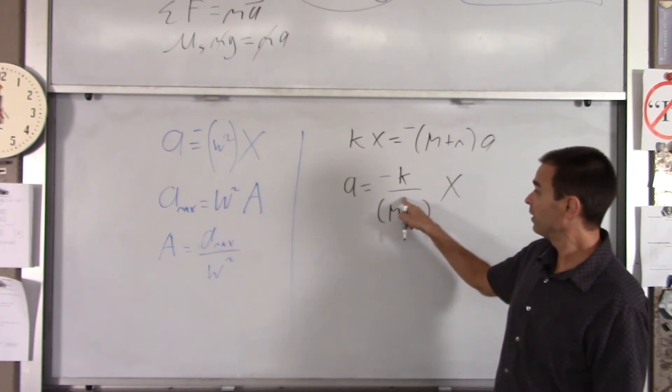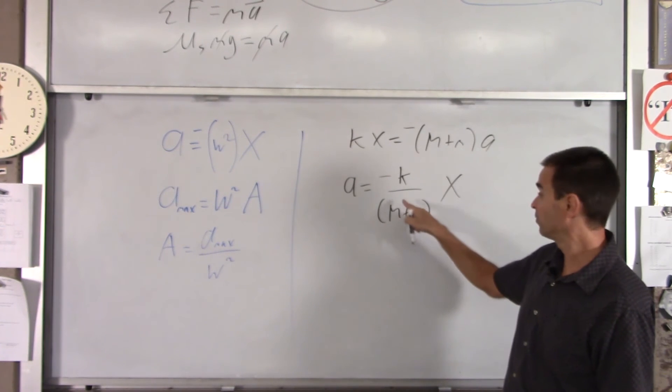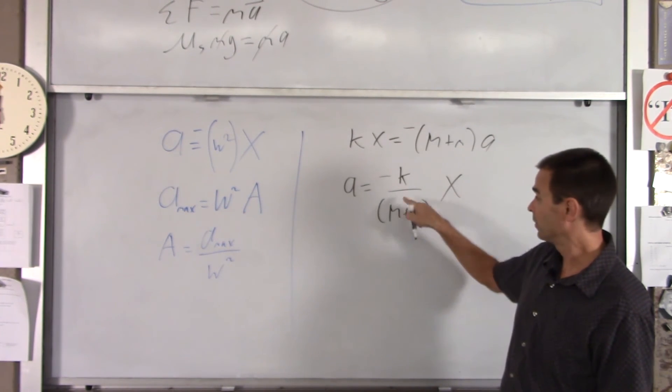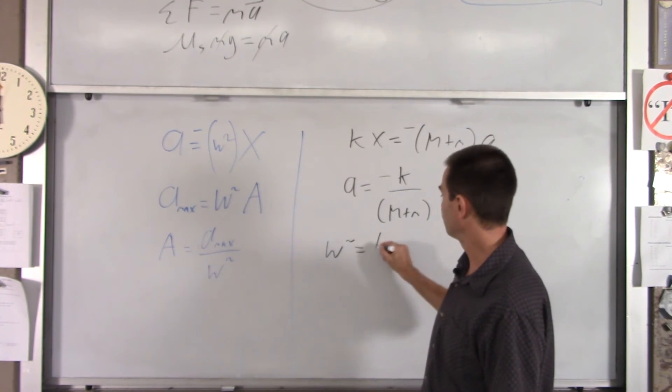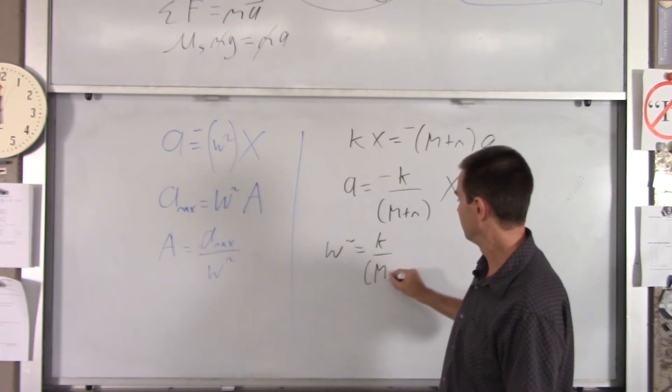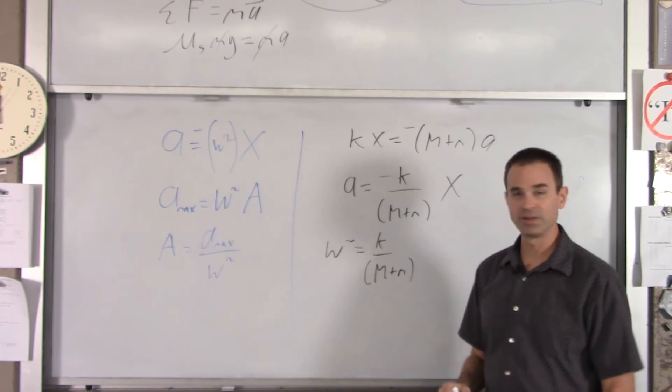Whatever's in front of the x, if I got a in terms of x, whatever's in front of the x is omega squared. So, I'll write omega squared equals k over big M plus little m.